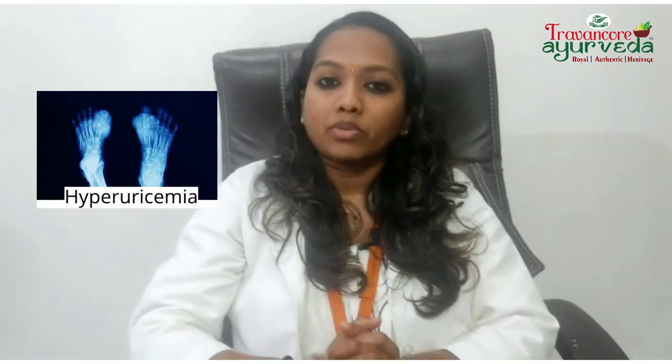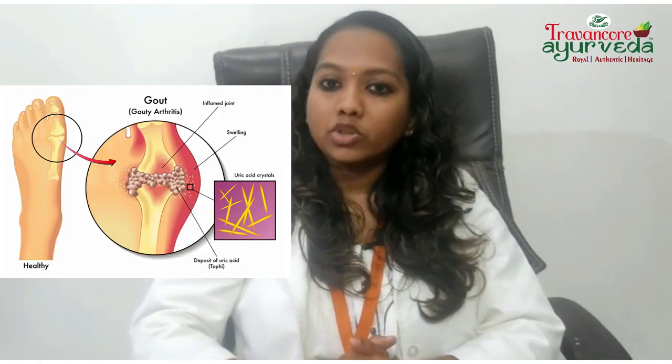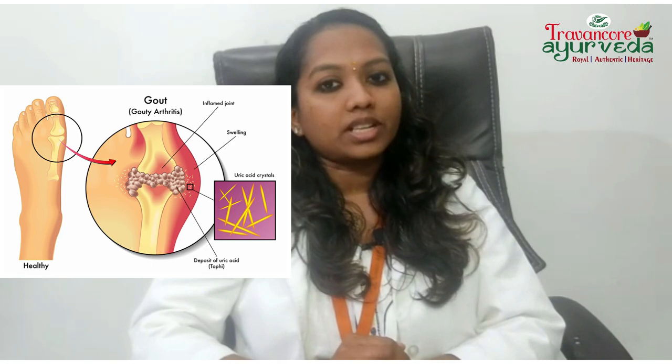Uric acid is a byproduct which forms in our liver during protein metabolism. If too much uric acid stays in the body, a condition called hyperuricemia will occur. This can cause crystals of uric acid to form, and these crystals get settled in the joints and lead to gouty arthritis.